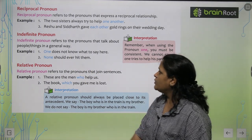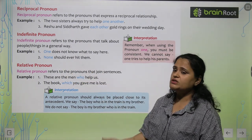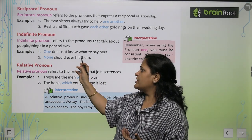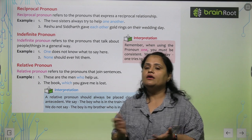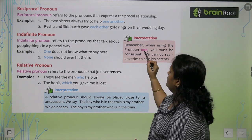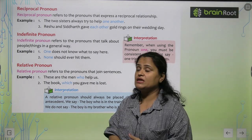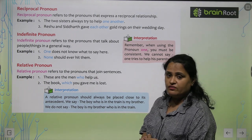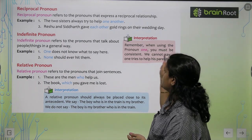Now, indefinite pronouns refer to pronouns that talk about people in a general way. For example: 'One does not know what to say here.' 'None should ever hit them.' We don't know who that someone is — these are called indefinite pronouns. Remember, when using the pronoun 'one' you must be consistent. We cannot say 'one's try to help his parents' — it should be 'one tries to help his parents.' You must be consistent.